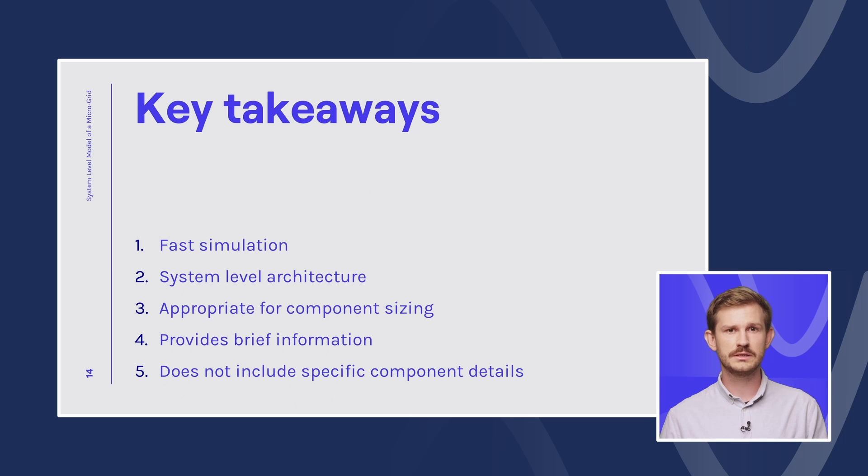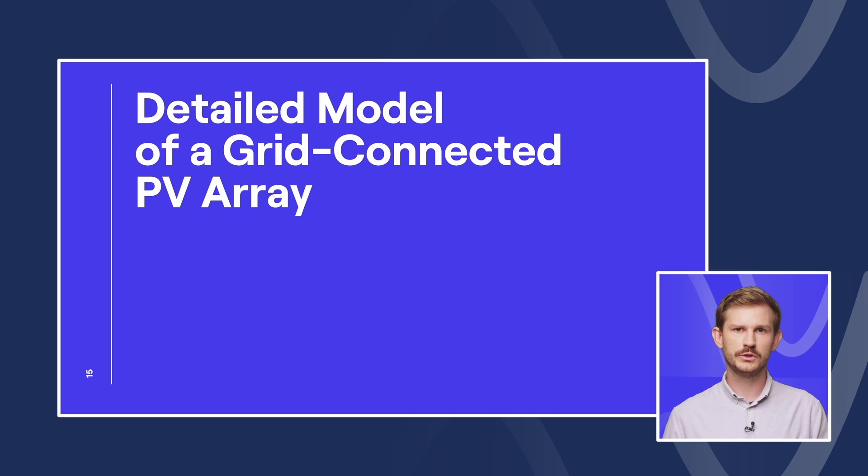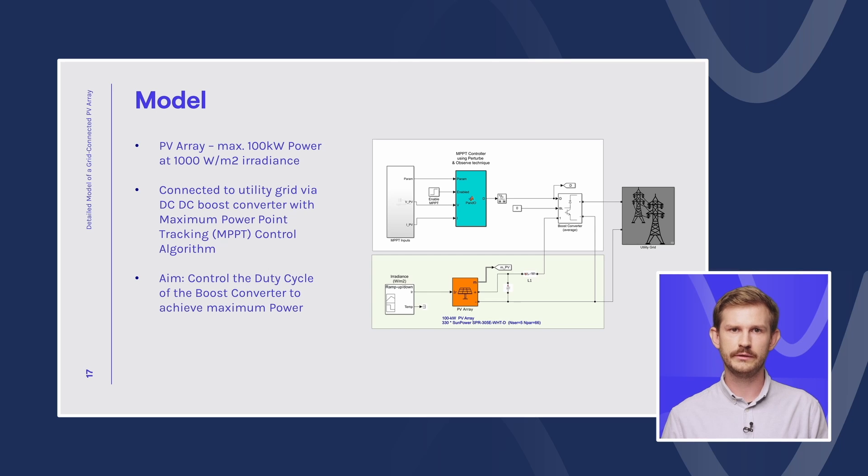And this leads us to the next example, which is the detailed model of a grid connected PV array. This example shows an average model of a photovoltaic array that is connected to a 25 kilowatt grid via a DC-DC boost converter and a voltage source converter. With this simulation, we will aim to control the duty cycle of the boost converter, and we will want to do it in a way so we have maximum output power from the PV array. The main components are the PV array delivering a maximum of 100 kilowatt power, and that is highlighted with green on the slide. Then we have a DC-DC boost converter with a maximum power point tracking algorithm. And we have a voltage source converter and a three-phase coupling transformer that connects the PV array to the utility grid.